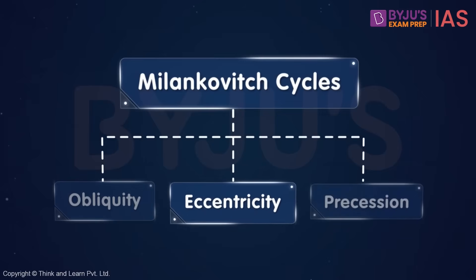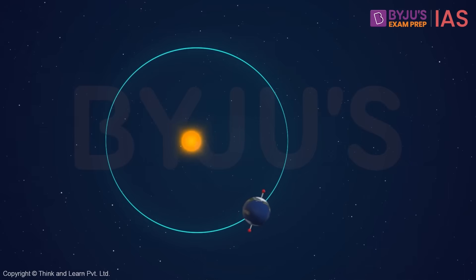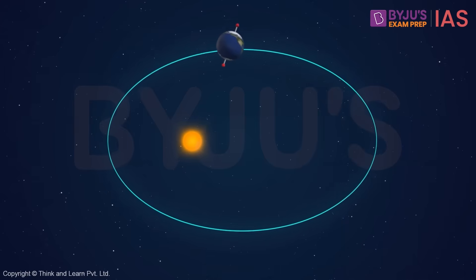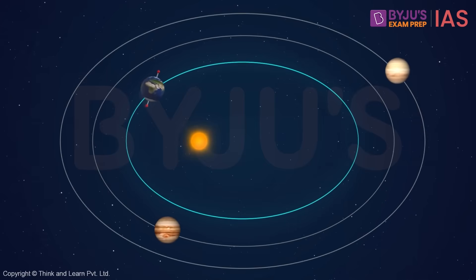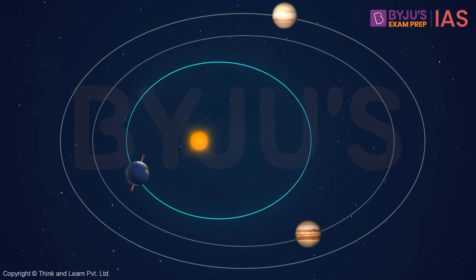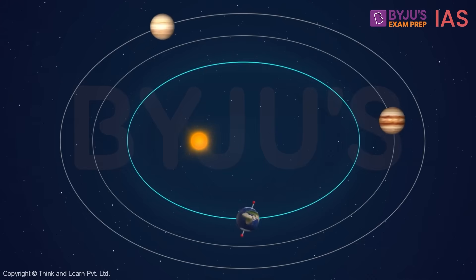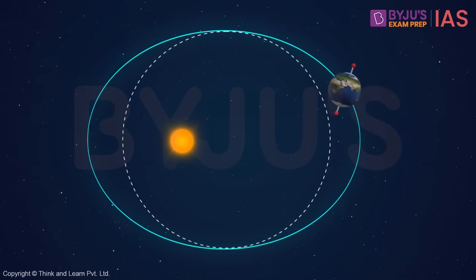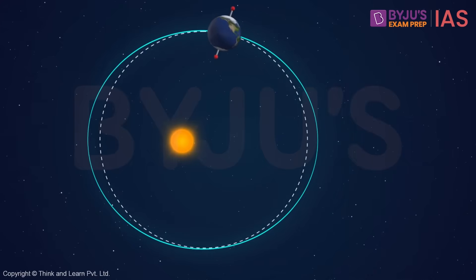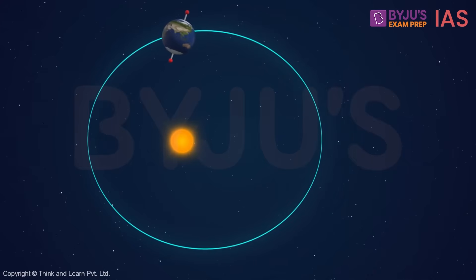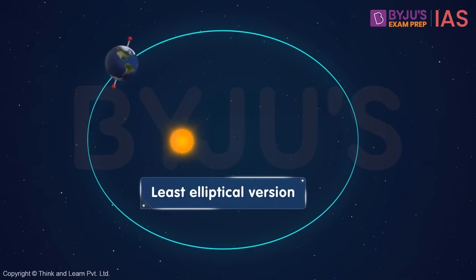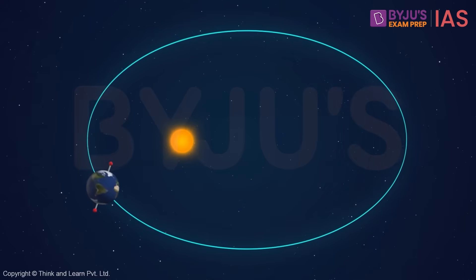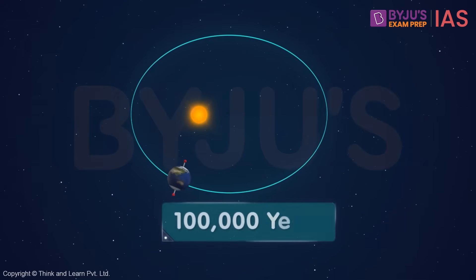Then we have eccentricity. The earth's orbit around the sun isn't perfectly circular, but it's pretty close. Over time, the gravitational pull of Jupiter and Saturn causes the shape of the earth's orbit to vary from nearly circular to slightly elliptical. Eccentricity measures how much the shape of the earth's orbit departs from a perfect circle. These variations affect the distance between the earth and the sun quite considerably. Currently, the earth's eccentricity is near its least elliptical version — almost circular — and is very slowly decreasing in a cycle that spans about 100,000 years.